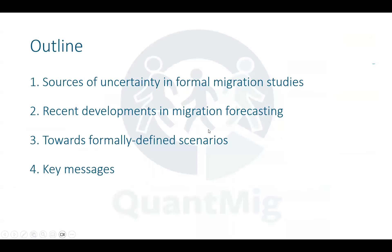What I'd like to talk about today is basically three things. First, the underpinning theme will be uncertainty — sources of uncertainty in formal migration studies and how we can deal with them. I'll then focus on recent developments in migration forecasting, and then recent advances in formal scenario making, because this is a formal demography workshop.